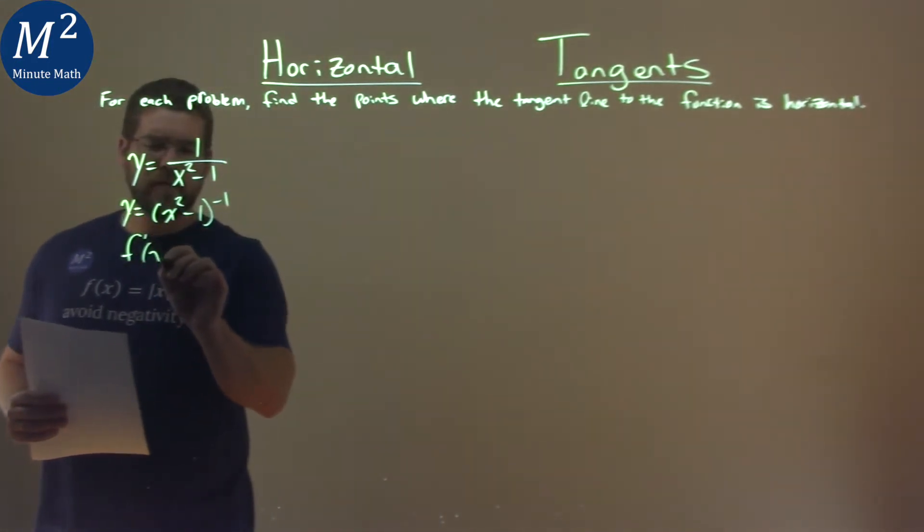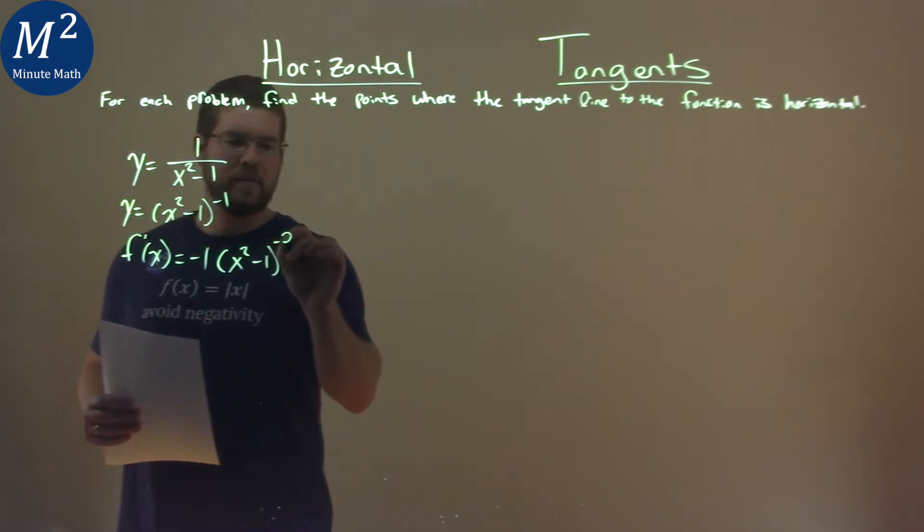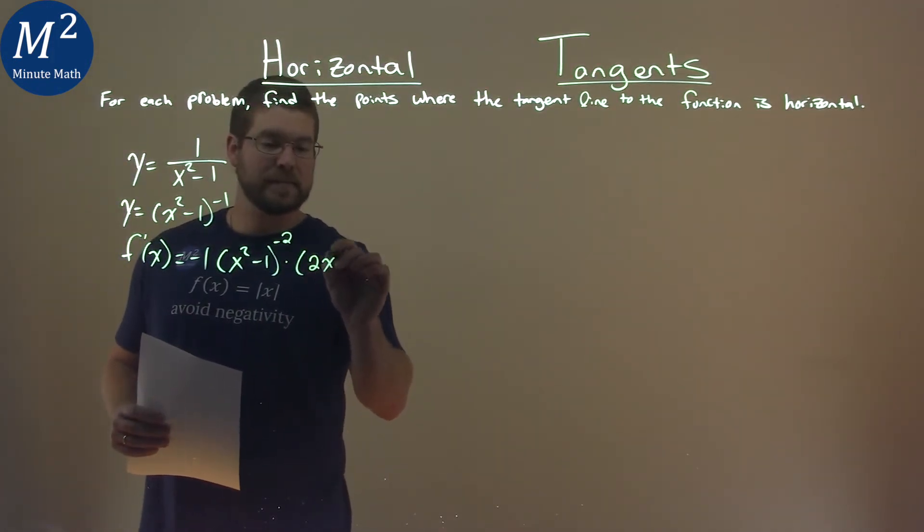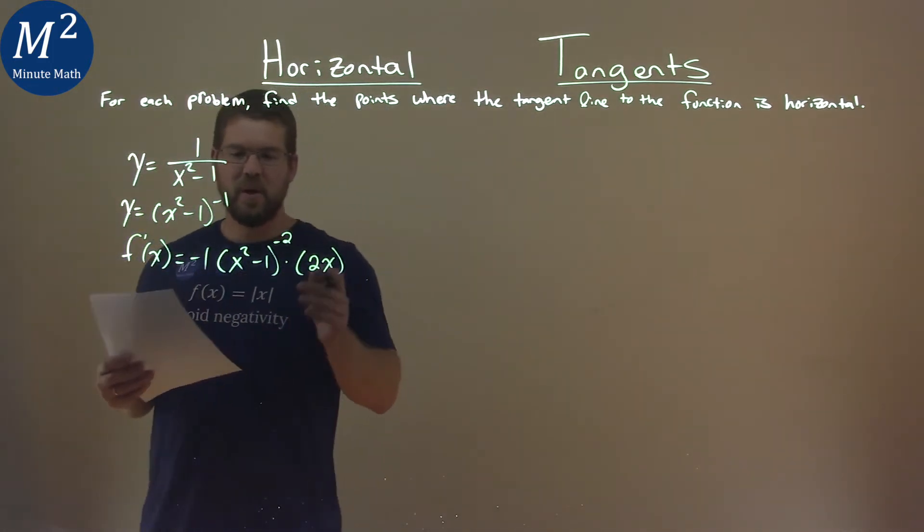So we find f prime of x here, negative 1 comes down, keep the inside, x squared minus 1, minus 1 subtracts by 1, and we have a negative 2. Multiply that by the derivative of the inside, which is 2x. Oh, almost messed that one up.